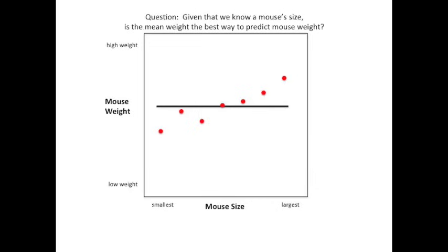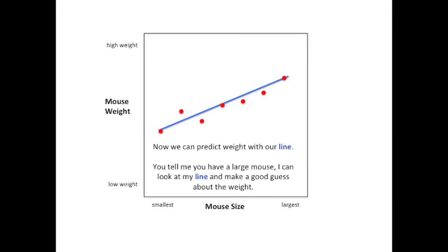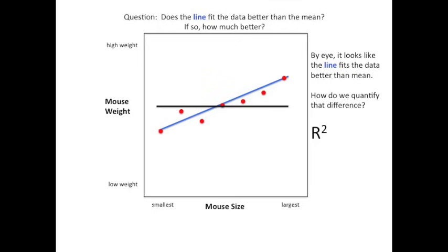Here's a question for you. Given that we know an individual mouse's size, is the mean or average weight the best way to predict that individual mouse's weight? The answer is no — we can do way better. All we have to do is fit a line to the data. Now we can predict weight with our line. You tell me you have a large mouse, I can look at my line and make a good guess about the weight. Here's another question: does the blue line that we just drew fit the data better than the mean? If so, how much better? By eye, it looks like the blue line fits the data better than the mean. How do we quantify that difference? R-squared.